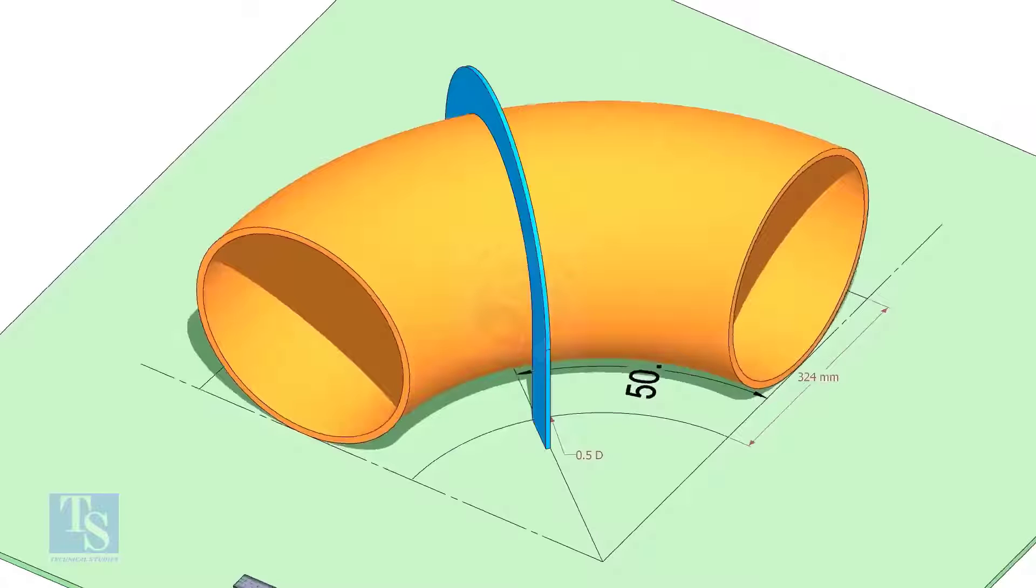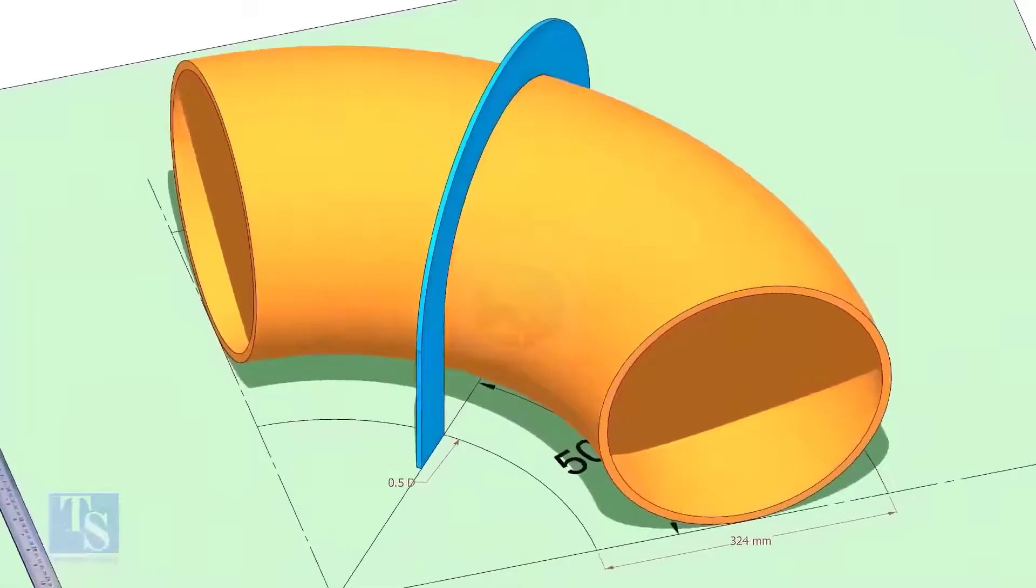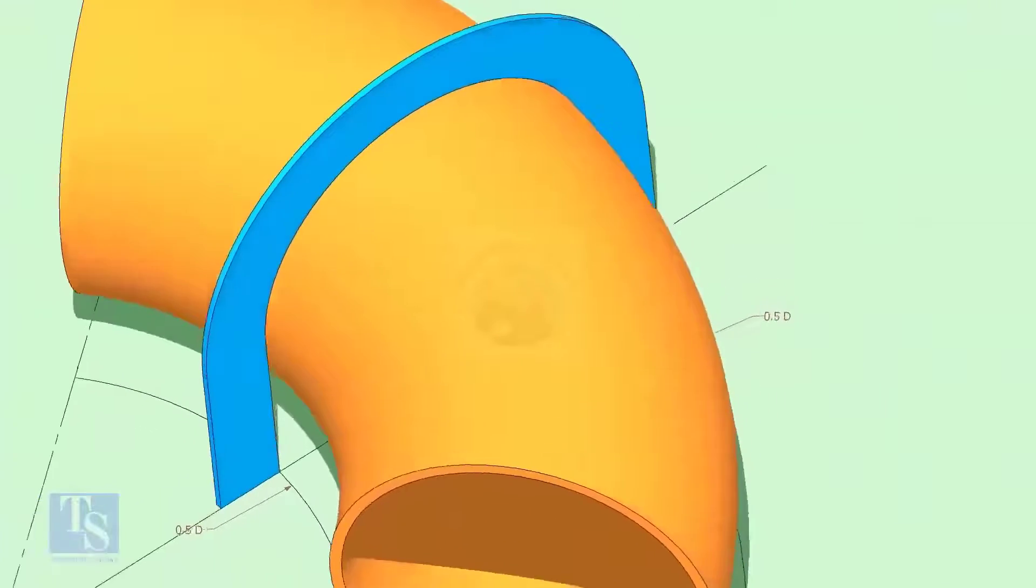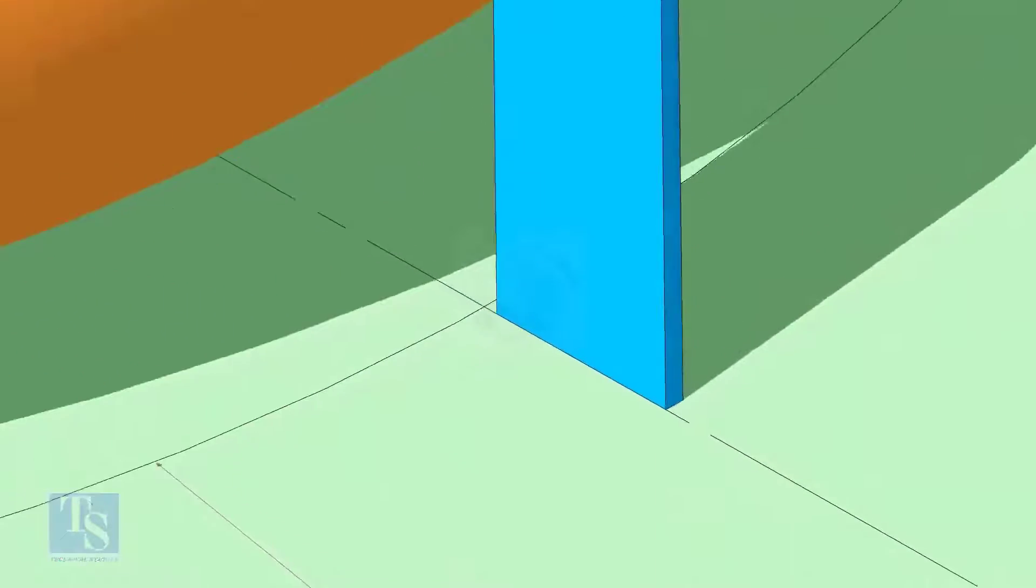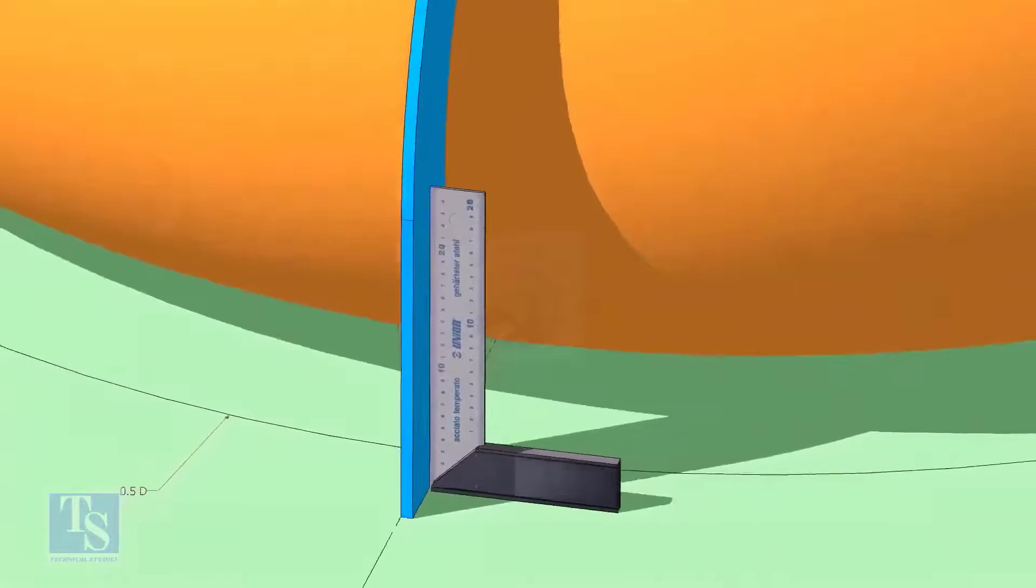Put the half radius plate on the elbow as shown, make sure it sits on the degree line. Make the squareness.